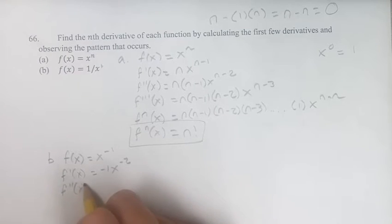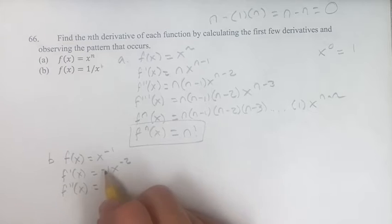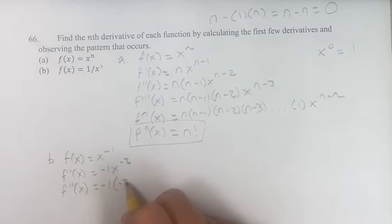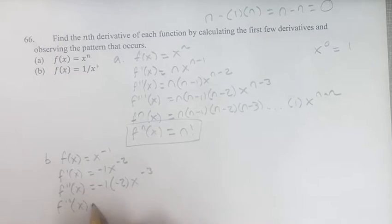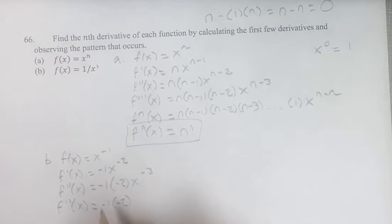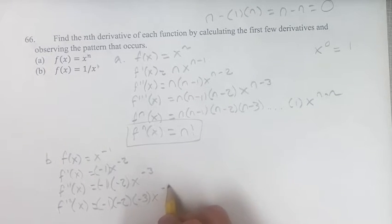For the second derivative: keep the coefficient, bring down the exponent, subtract 1 to get the new exponent. For the third derivative, we should see the pattern: negative 1 times negative 2 is our coefficient, bring down the exponent to get x to the negative 4.